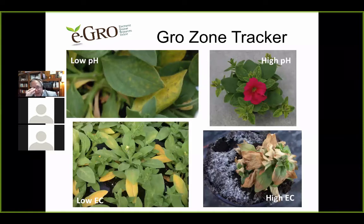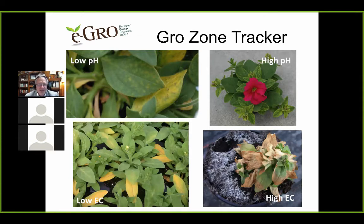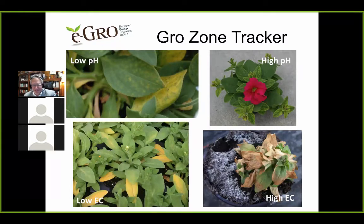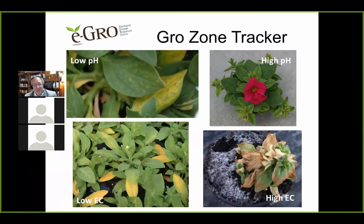What we want to avoid: upper left shows low pH problems, upper right shows high pH problems, lower left shows a petunia with EC too low, and lower right shows burn from too much salt and high EC. We're monitoring pH and EC over time so you don't get into a zone where there's a challenge with nutrition.